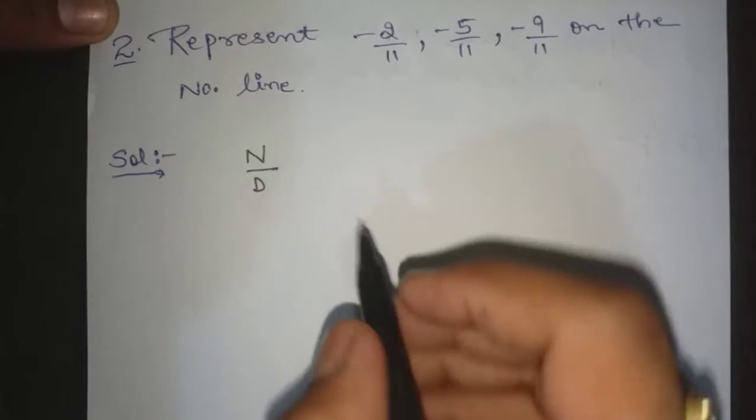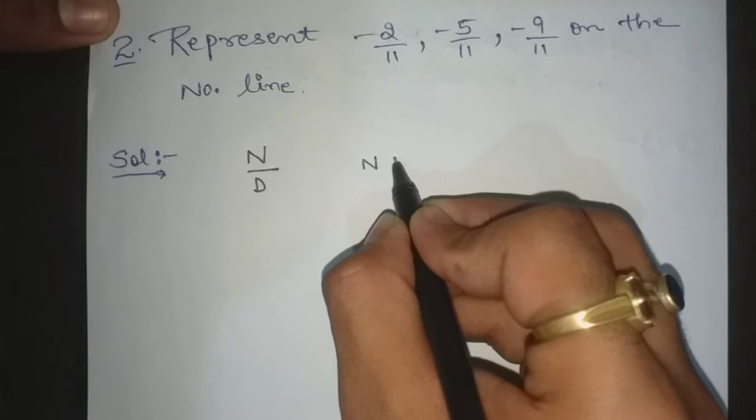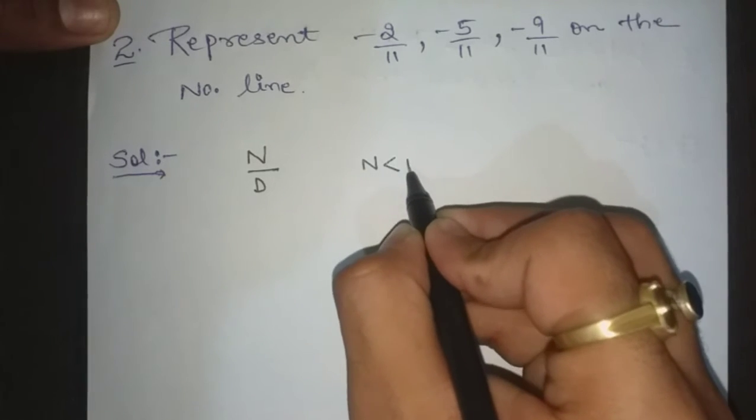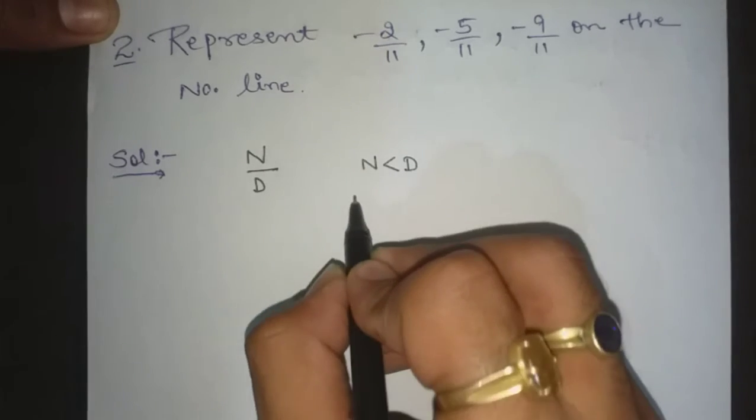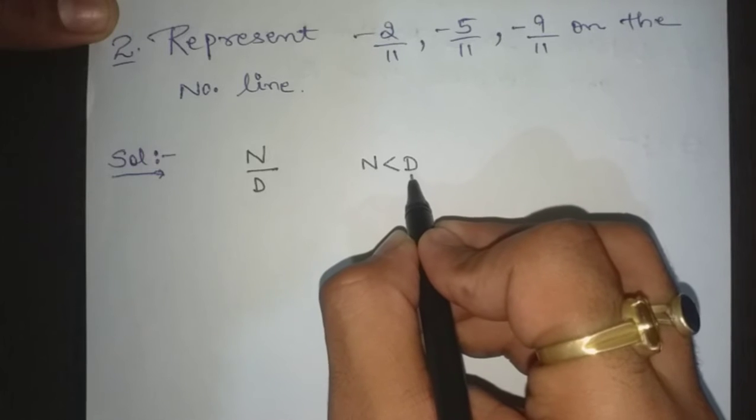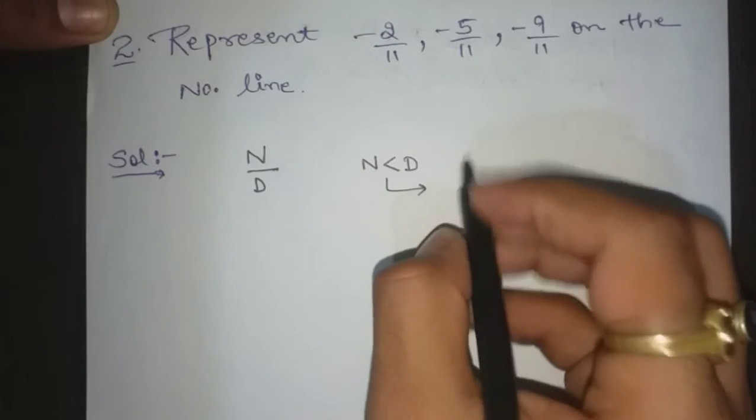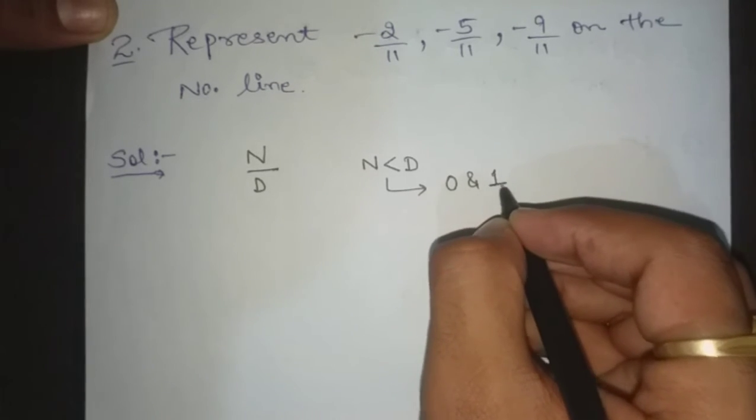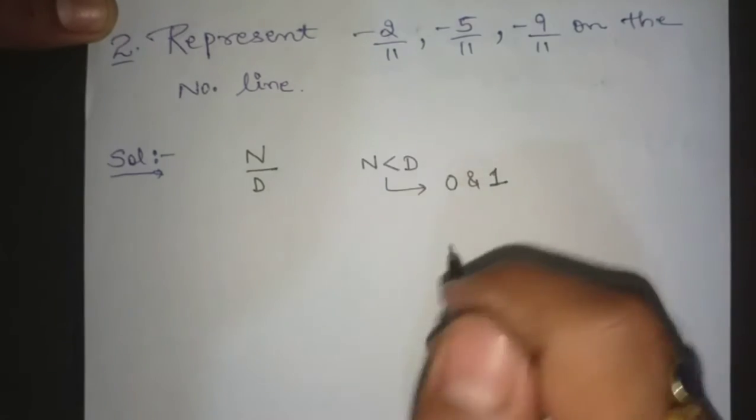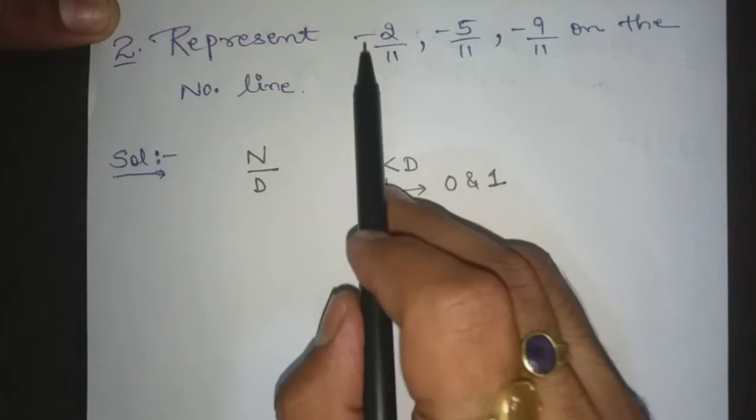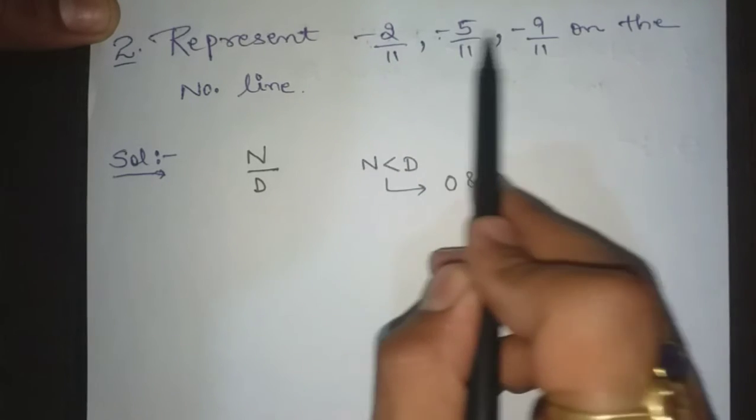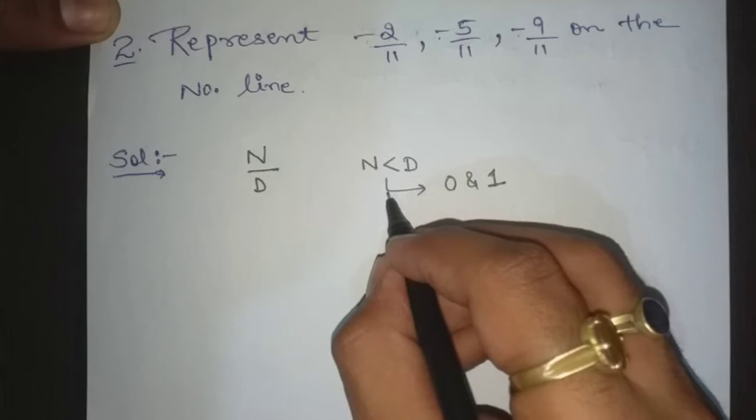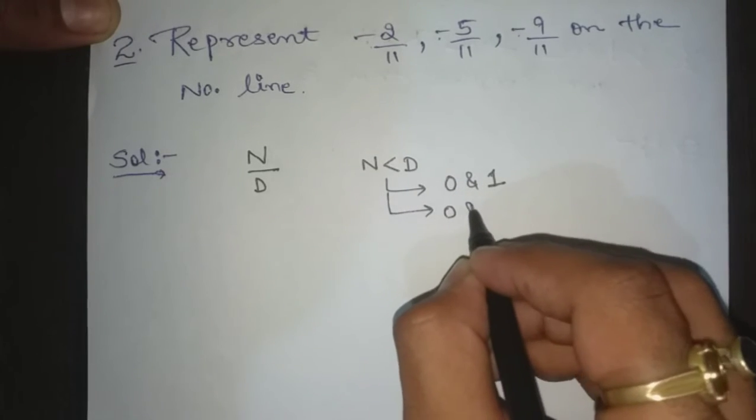If numerator is less than denominator, the numerator is small with denominator, so the answer will be between 0 and 1. But now you can see all the rational numbers are with minus, so the answer will be between 0 and minus 1.